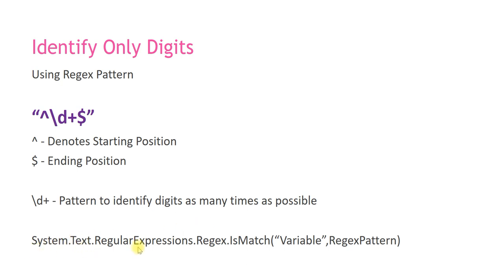This regex is in the namespace System.Text.RegularExpressions. I'm going to use the IsMatch function. In this function we need to pass two parameters: the first one is your input variable, and the second one is the regex pattern. If we use this IsMatch method it will return a boolean value — if your input variable contains only digits it will return true.